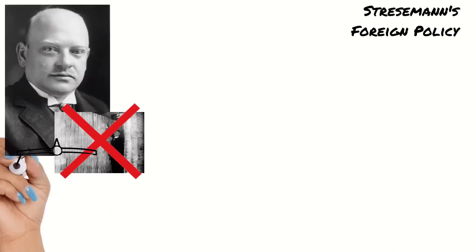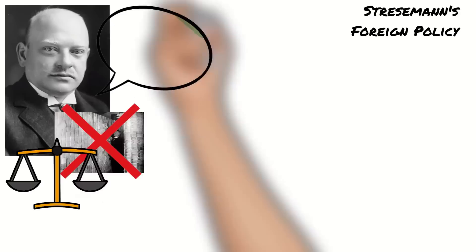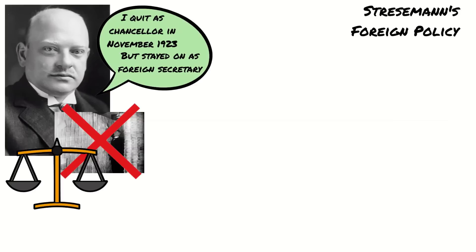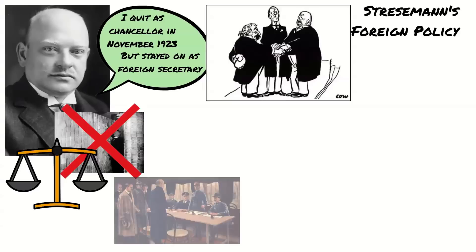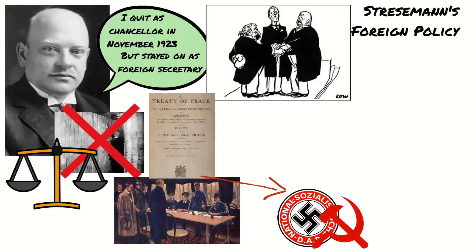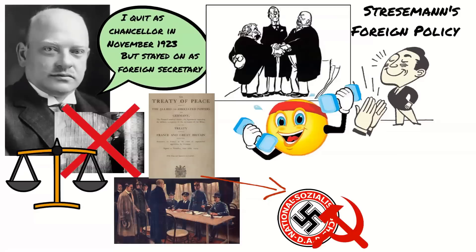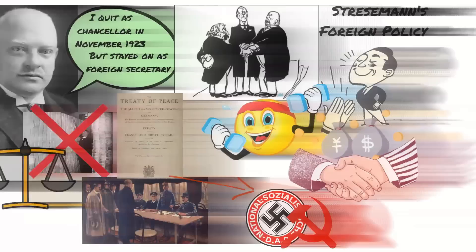Last time we looked at Stresemann's economic policies that ended hyperinflation and stabilised the economy in the 1920s. Although Stresemann resigned as Chancellor in November 1923, he continued as Foreign Secretary until 1929. Today we're going to look at his foreign policies and how Stresemann improved Germany's relations with other countries. This was really important because defeat in World War I and the Treaty of Versailles had led to support for extremist parties such as the NSDAP and the Communists. By improving foreign relations, Stresemann could show the population that Germany was still a proud nation, build confidence in the Weimar Republic, and increased trade would help reduce hardships caused by hyperinflation.